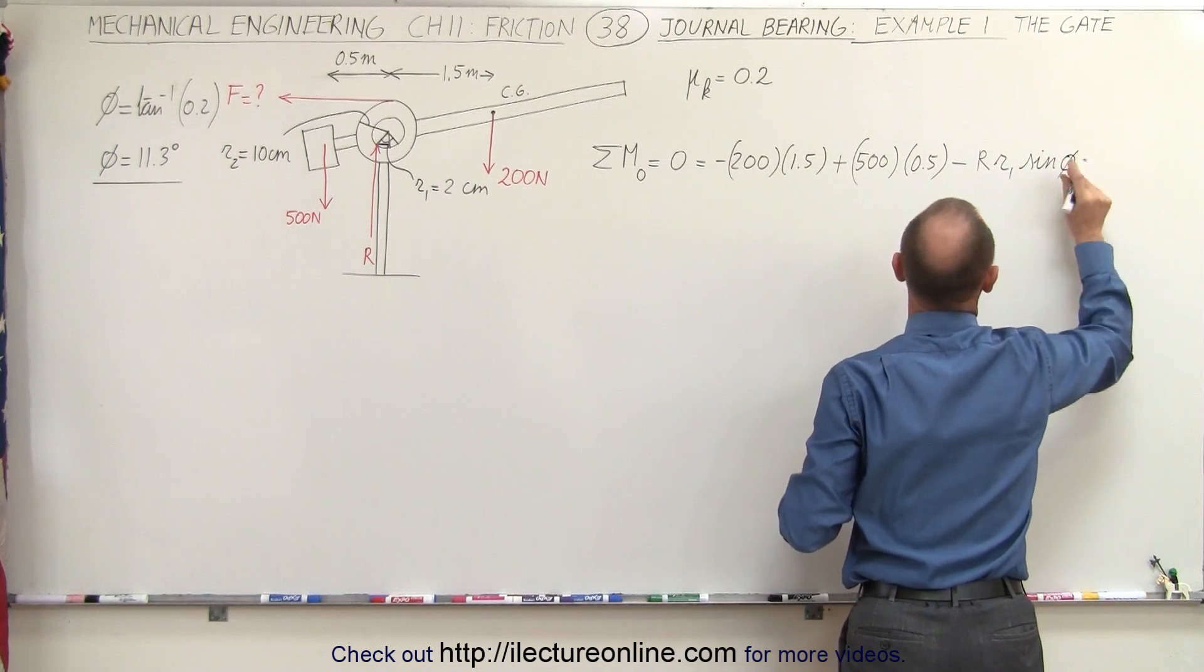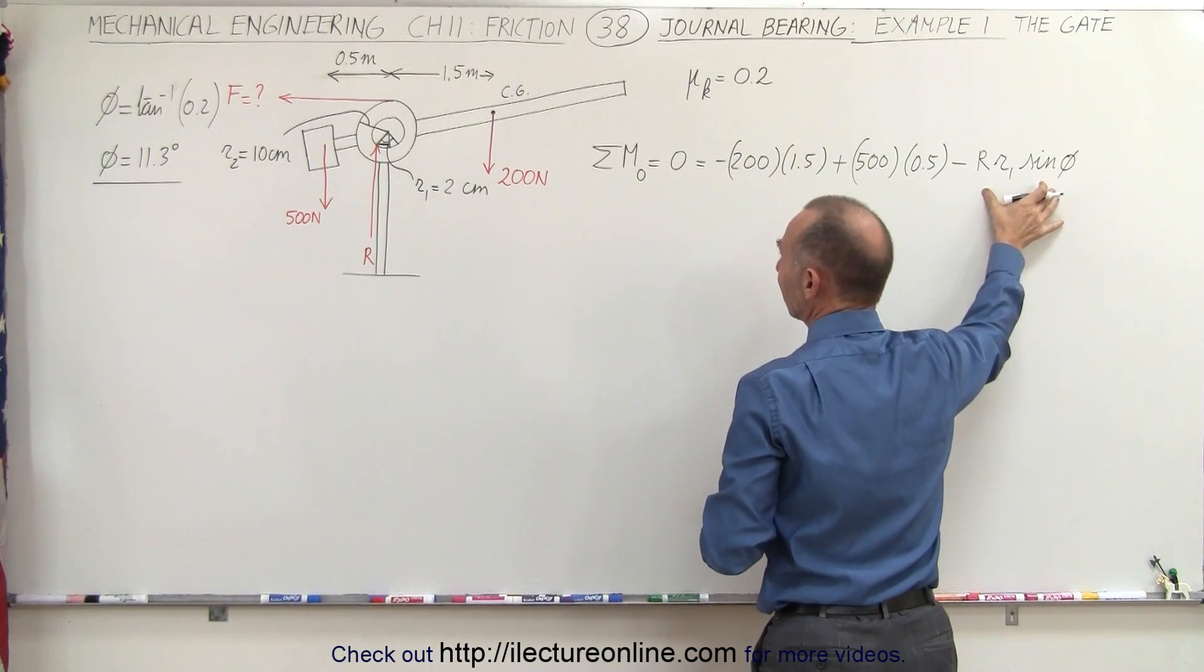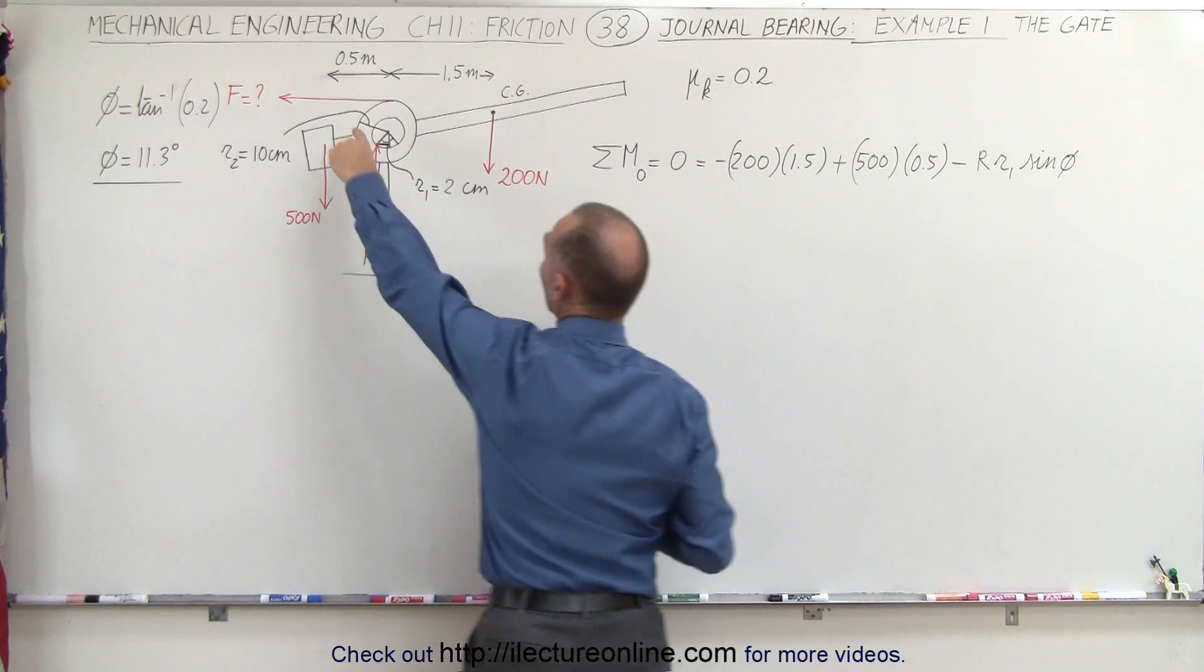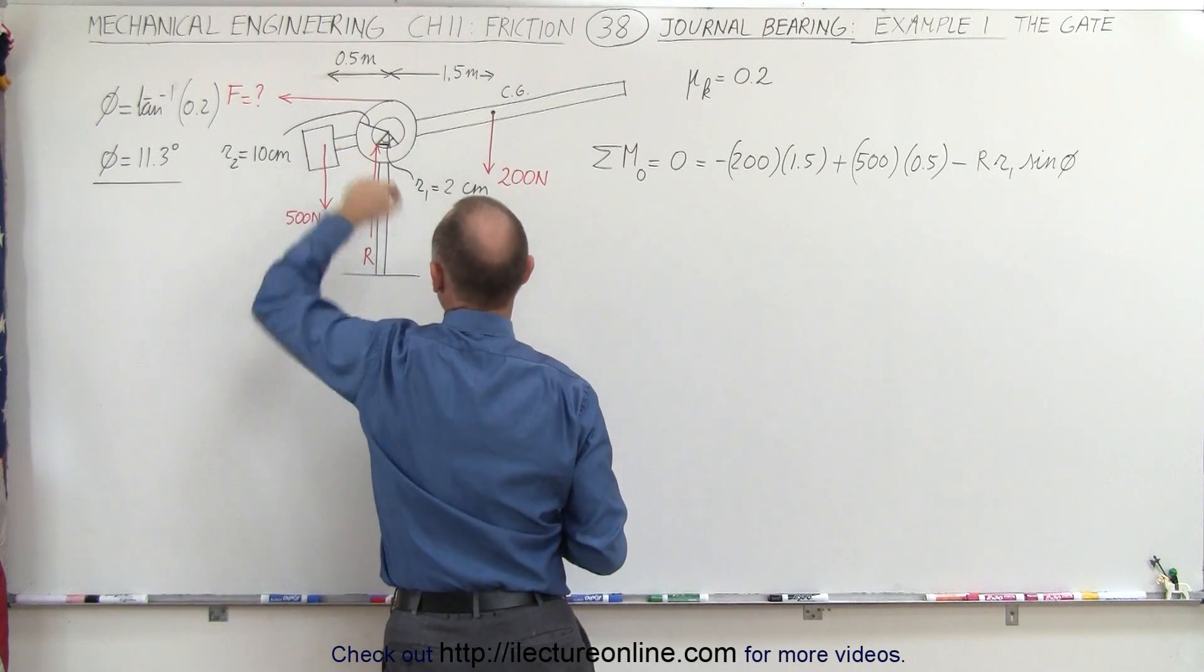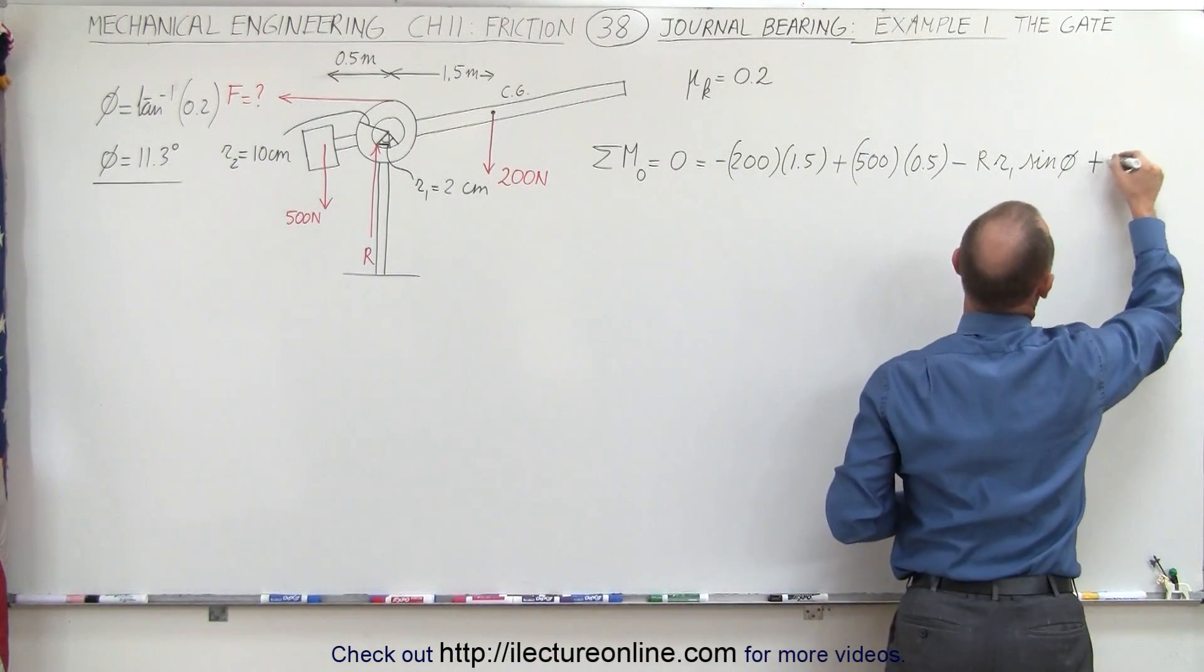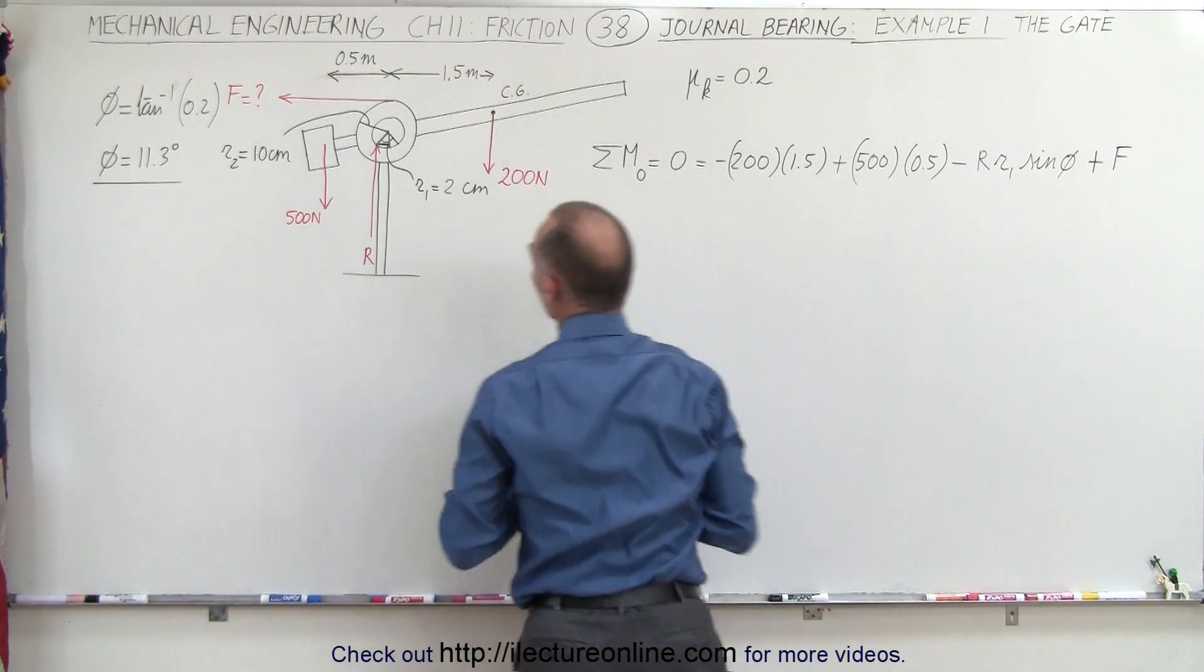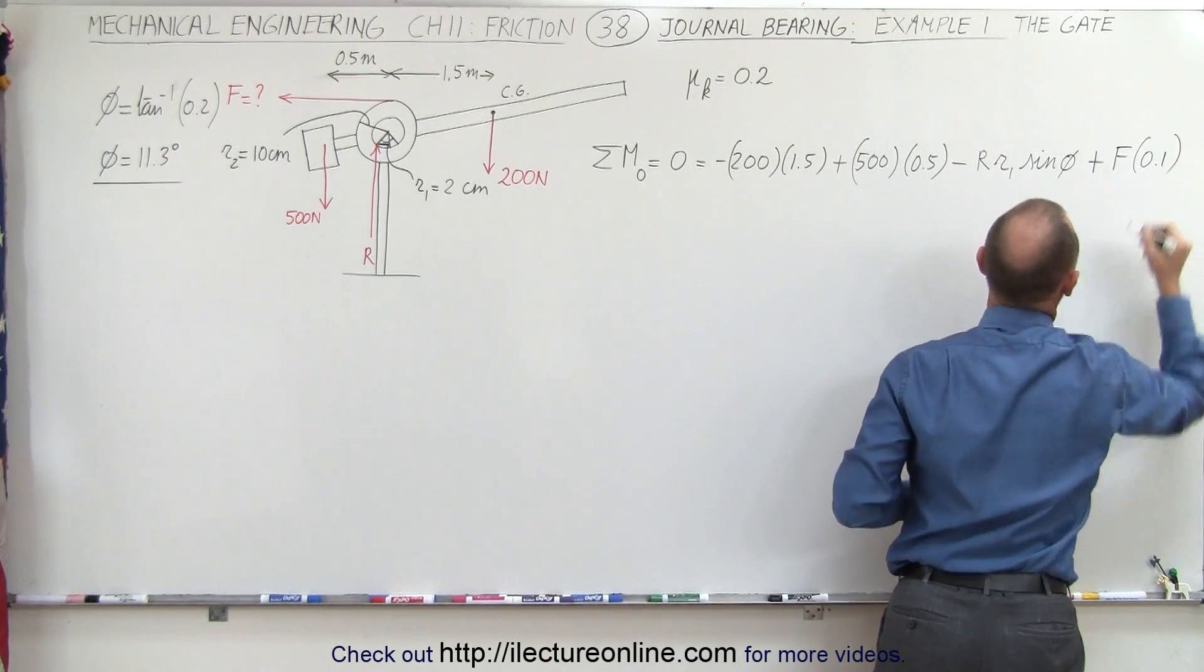That would be the moment caused by the friction force, which we found in the previous video. Finally, we have the force here applied in order to cause the gate to open up, and that will give us a counterclockwise torque. That would be plus F times the moment arm, or the radius of that, that would be R2, or 10 centimeters, which is 0.1 meter.